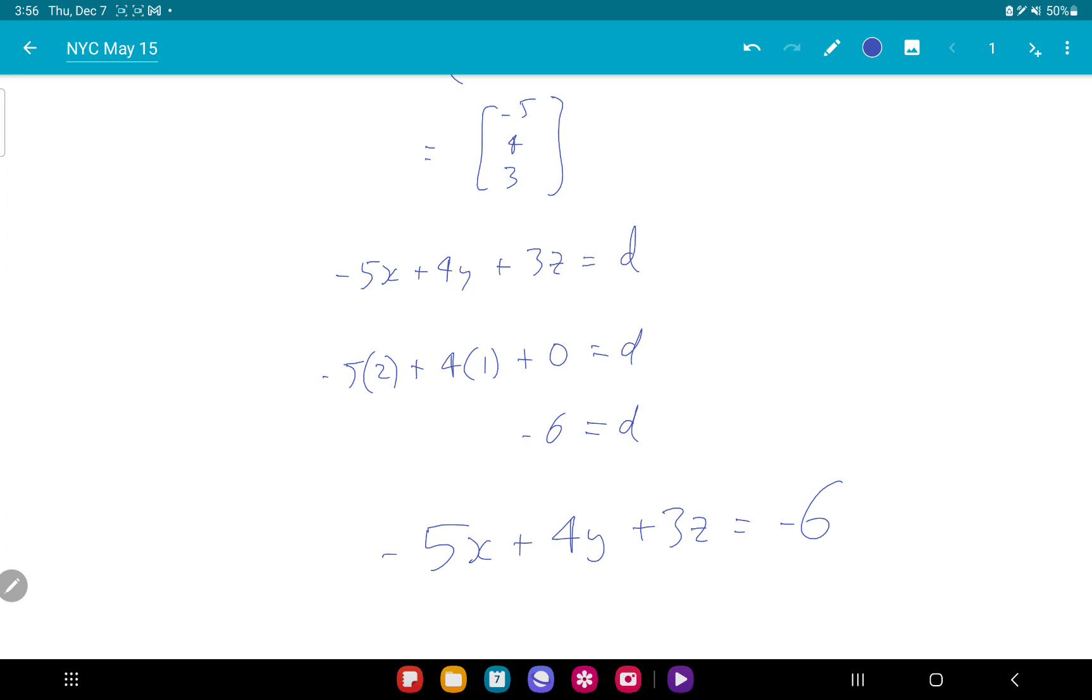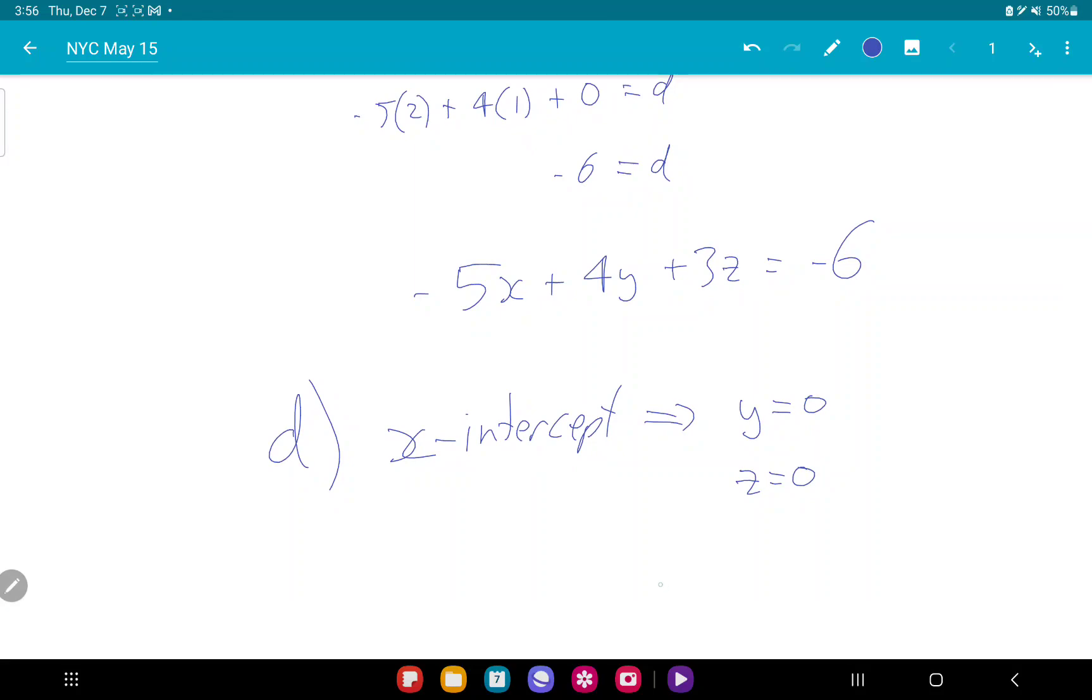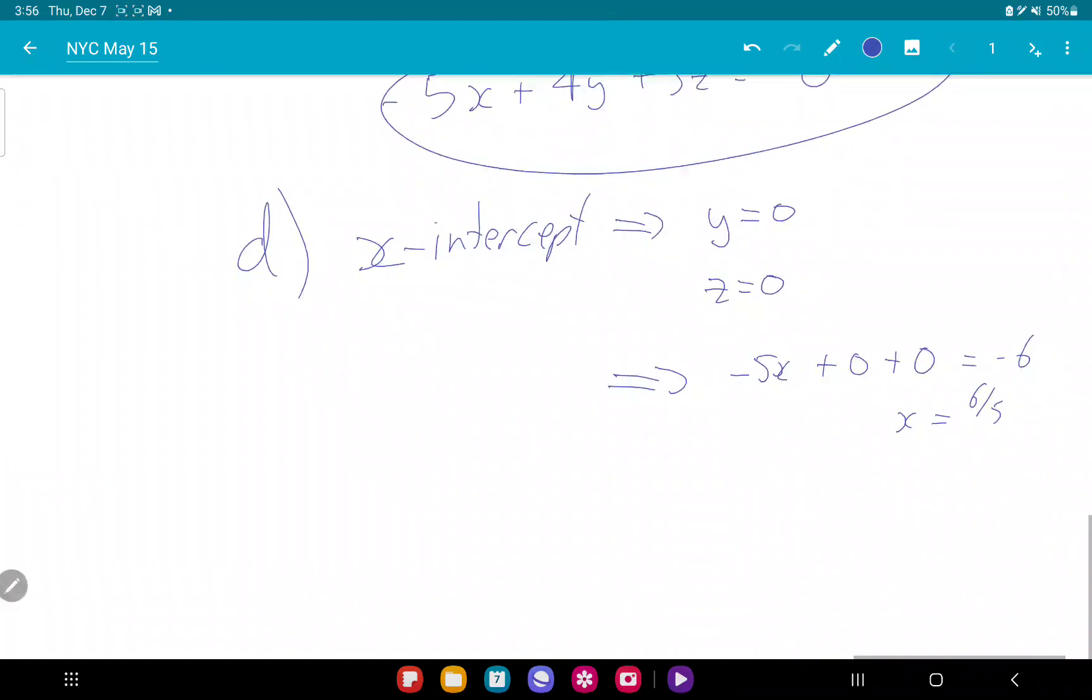I want to find the x-intercept of this plane. For the x-intercept, you set y equals 0 and z equals 0 in this equation. So x will be 6 over 5, so the point we're talking about is (6/5, 0, 0).